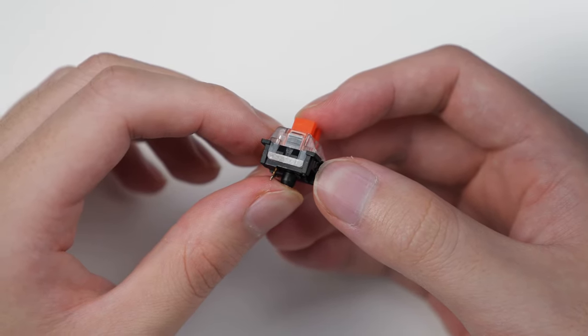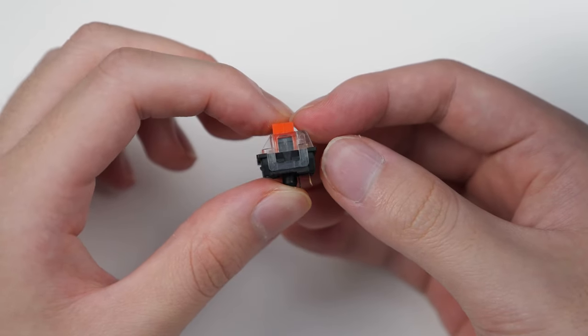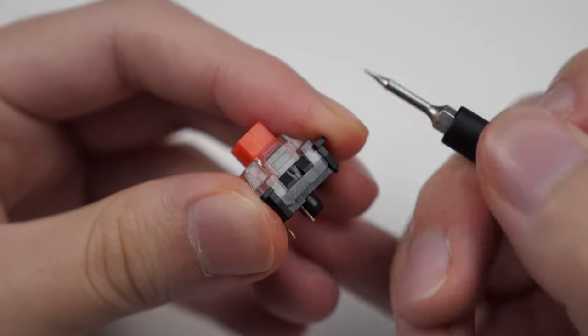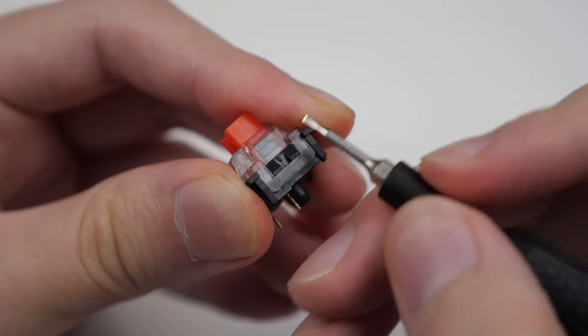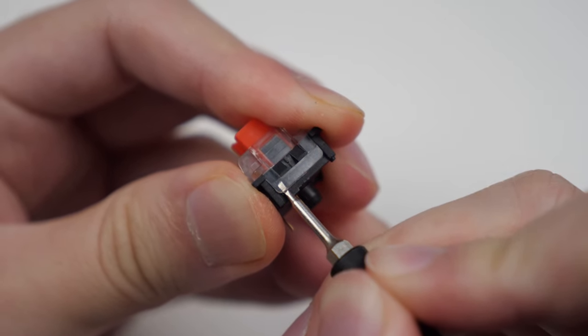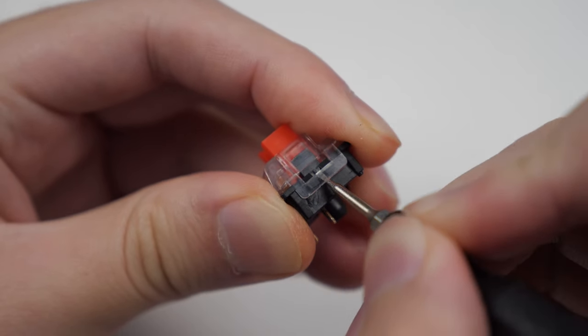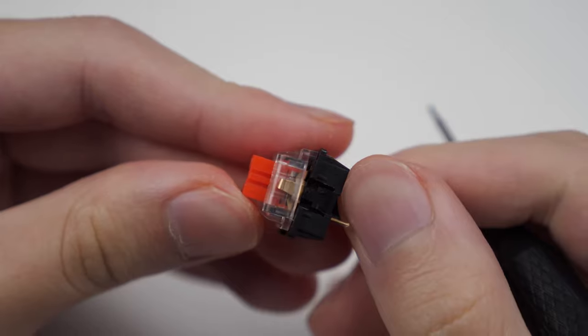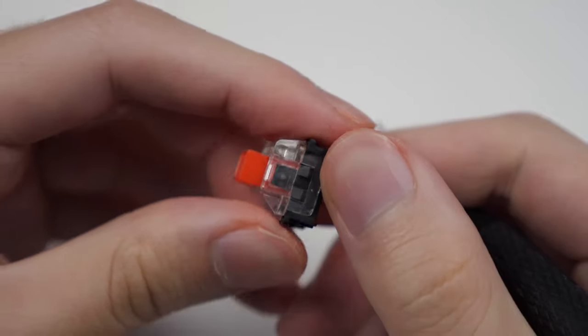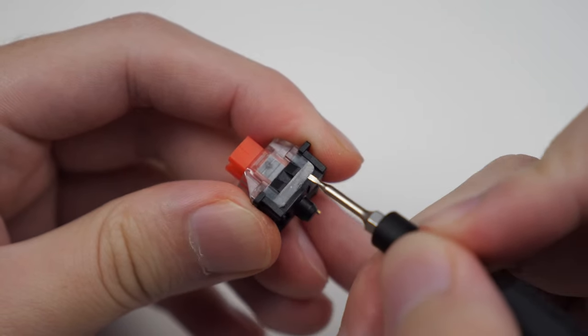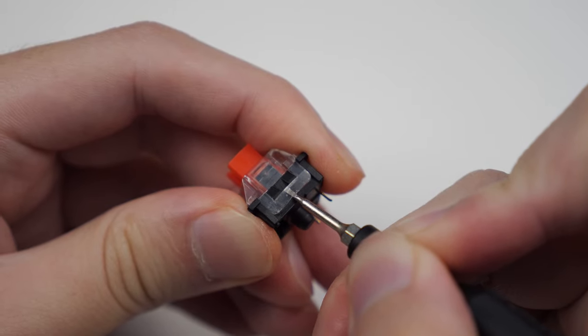You need to have a small flathead screwdriver to open it up. You basically need to carefully drive the flathead into the corner so that it goes under the bracket, then slowly move it to the center, and then pull up to release the top housing. It's a little more difficult than cherry style switches, so be sure to take your time because you don't want to break the bracket.